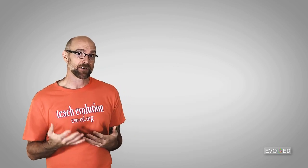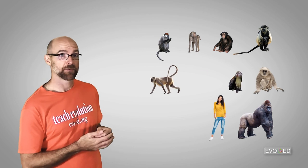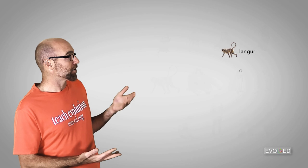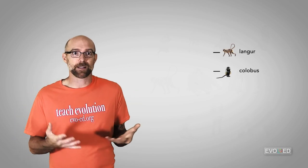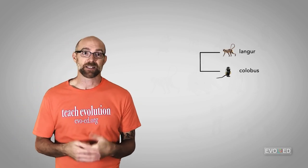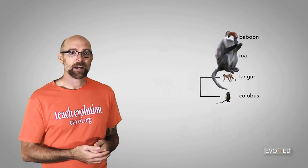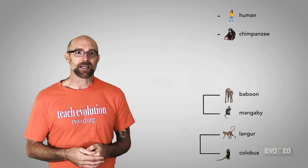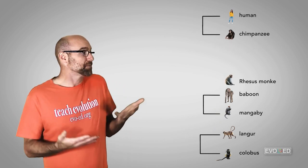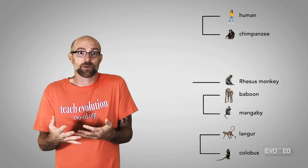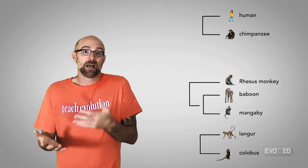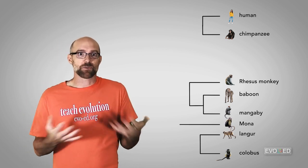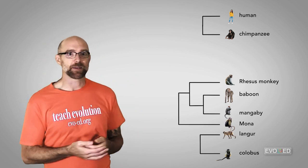When we look at this sequence of this gene across this group of species, what we would find is that the cytochrome B sequences of the langur and the colobus are really, really similar. As are the cytochrome B sequences for the baboon and the mangabey, and the sequences for the human and the chimpanzee. We can carry on from there. The rhesus monkey's sequence is most like the sequences that we find in the baboon and mangabey, and the sequence found in the mona is more similar to those three species than any other species in our group.